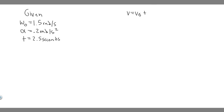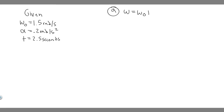Let's start with part A. We're trying to find the angular velocity at t equals 2.5 seconds. The equation we're going to use is omega equals omega_0 plus alpha times t. We have omega_0, the initial angular velocity; we have alpha, the angular acceleration; and we have t, the time. We can just plug in and solve.